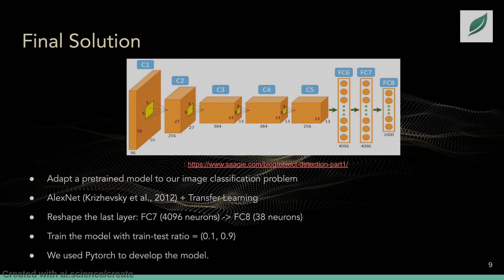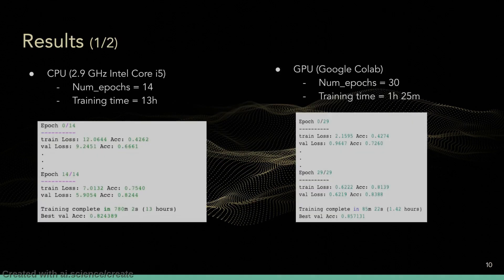For our final solution, we decided to adapt a pre-trained model. We used AlexNet as the deep learning architecture and applied a transfer learning approach. AlexNet is composed of five convolutional layers, followed by two fully connected layers and a final softmax output layer. We reshaped the last layer, then trained it while freezing the other layers. The train-to-test ratio was 10% to 90%, and we used PyTorch to develop the final model.